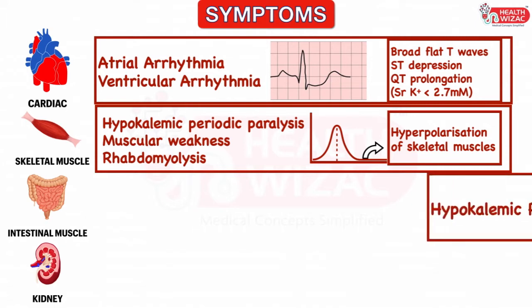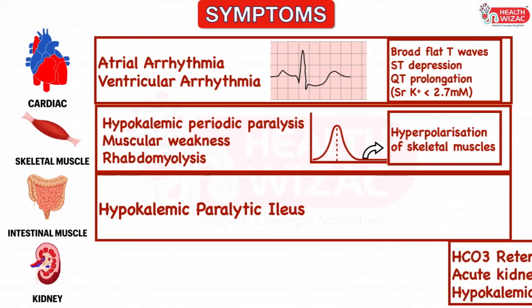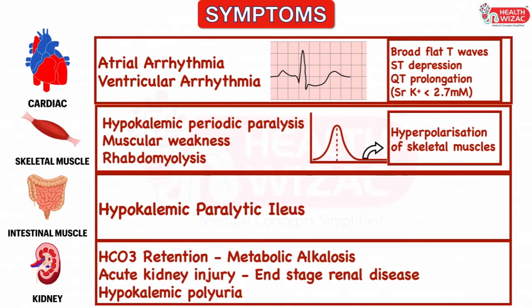Hypokalemia also affects the normal movements of bowel, thus giving rise to intestinal symptoms of paralytic ileus. It may lead to bicarbonate retention causing metabolic alkalosis. It may also lead to acute kidney injury, and if not treated timely, may even lead to end stage renal disease. Apart from this, hypokalemic polyuria may also be a clinical manifestation.